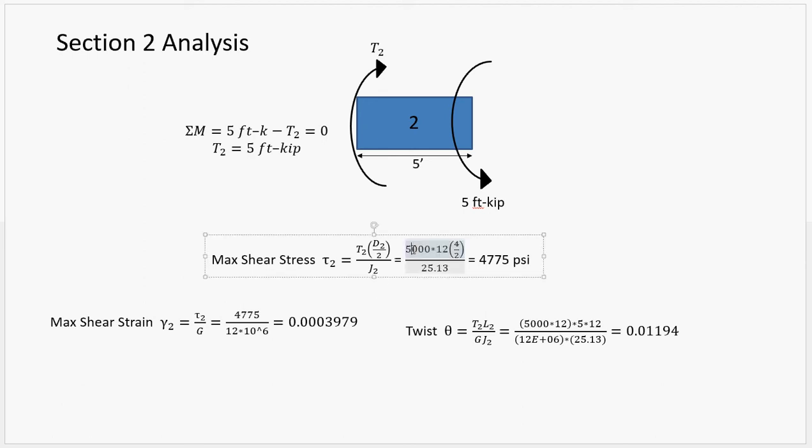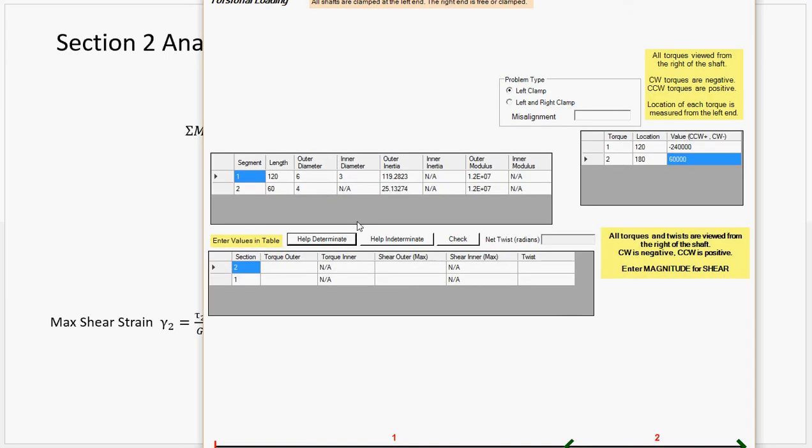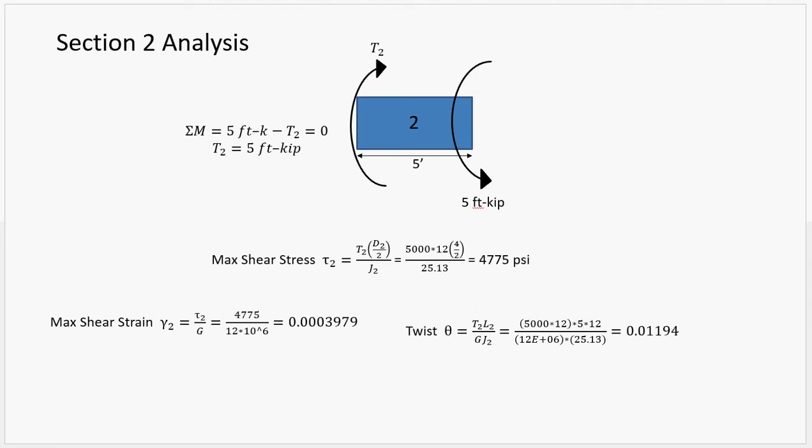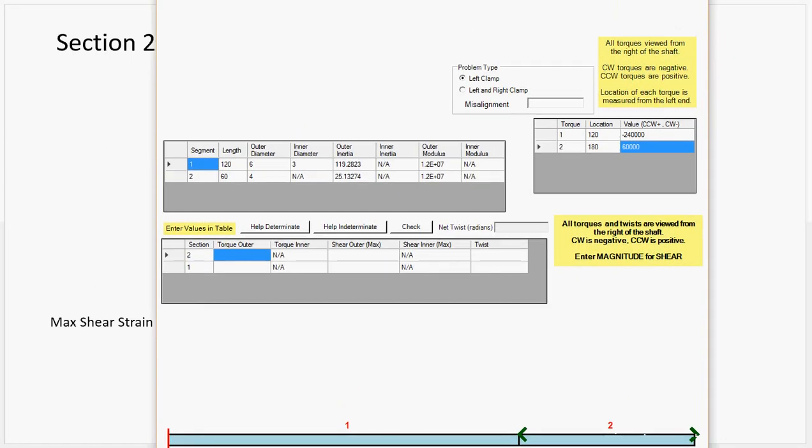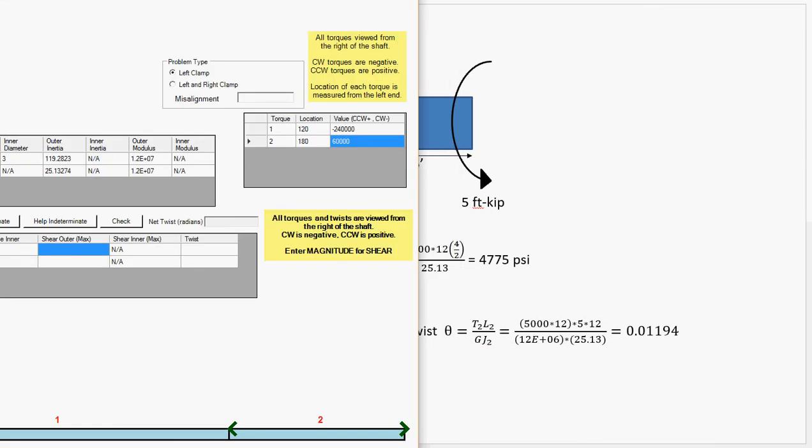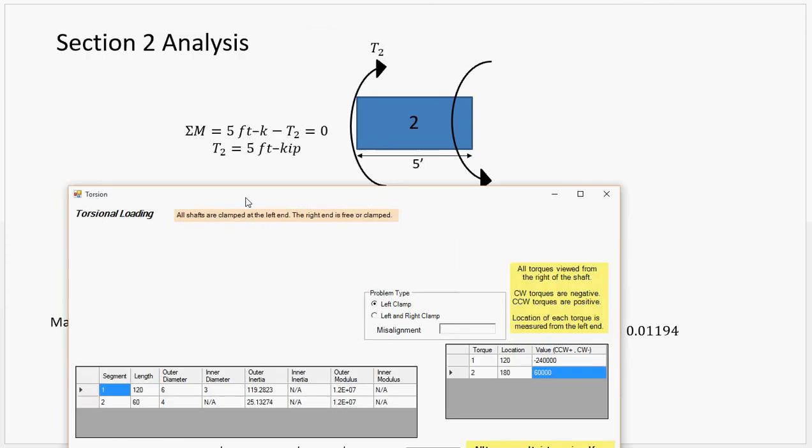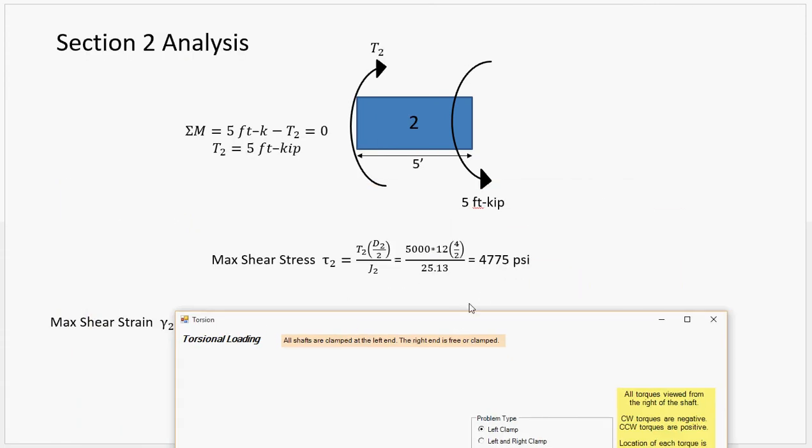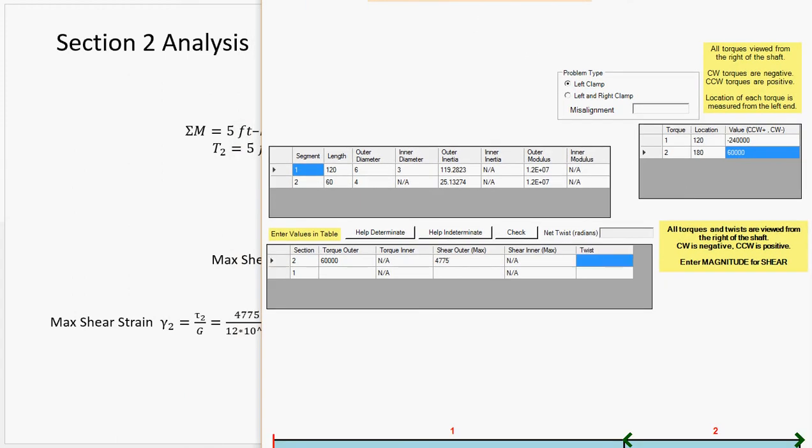Now, know in here that I have multiplying the 5,000 foot-pounds times 12, bringing it into inches, and so on. Okay. So, let's put in these values. Okay. So, that's 60,000 inch-pounds, 4775. And part of the reason I turned it into inches is so that I would end up having values like the max shear stress being in PSI, which is kind of nice. Okay. I'm going to twist.